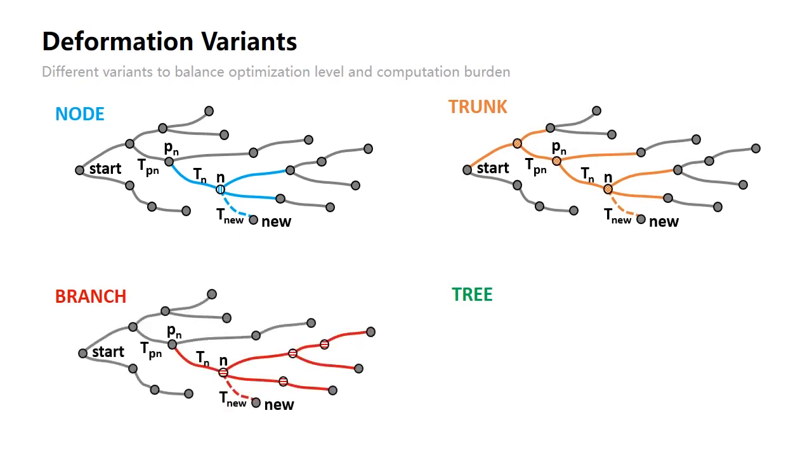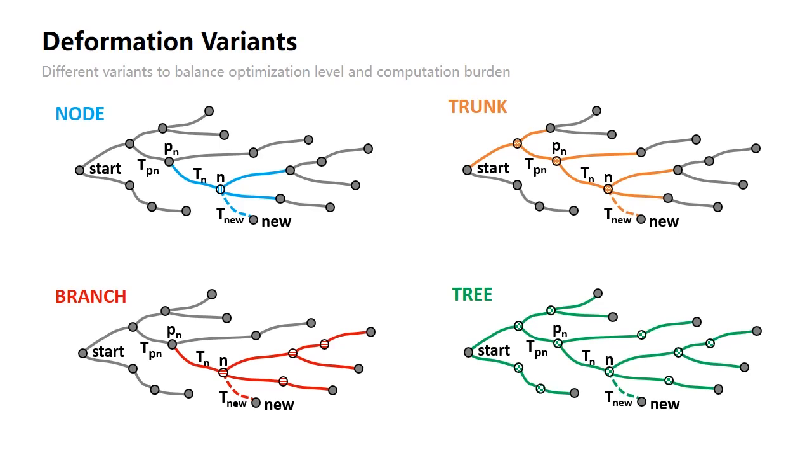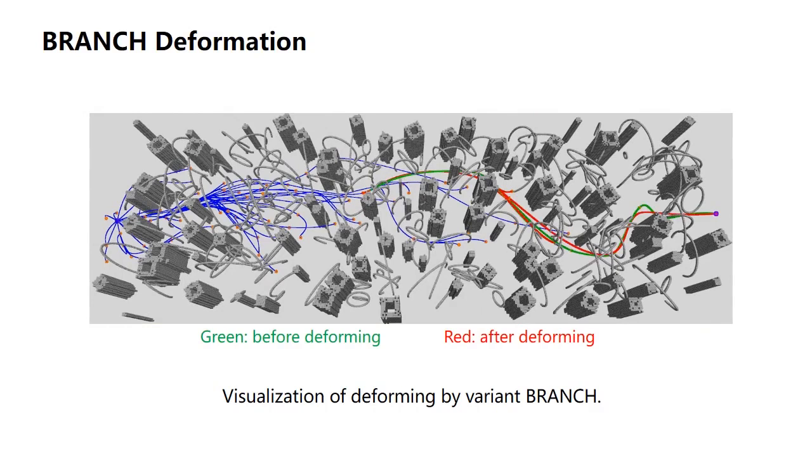Branch optimizes every node and edge in the subtree rooted at node N. All the leaf nodes are excluded. Tree optimizes every node and edge in the entire tree except the start node and all the leaf nodes. Here is the visualization of deforming by variant branch.